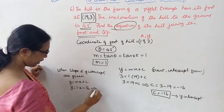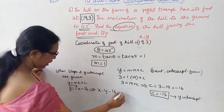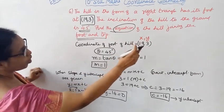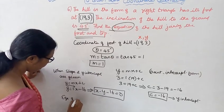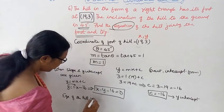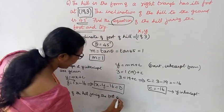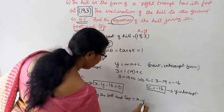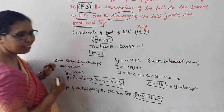Y equal to 1 into X plus minus 16. Y equal to X minus 16. X minus Y minus 16 equal to 0. X minus Y equal to 16.